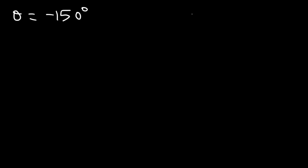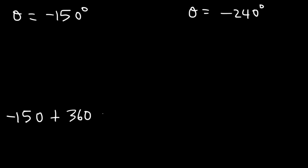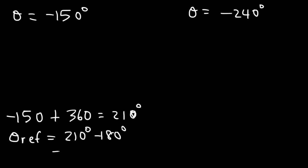Now what if you have a negative angle? For example, let's say negative 150 or negative 240. If you don't want to do it graphically, the first thing you should do is find a coterminal angle. Negative 150 plus 360 is equal to 210. Now 210 is in quadrant 3 — it's between 180 and 270 — so to find the reference angle, it's that angle minus 180, giving a reference angle of 30.